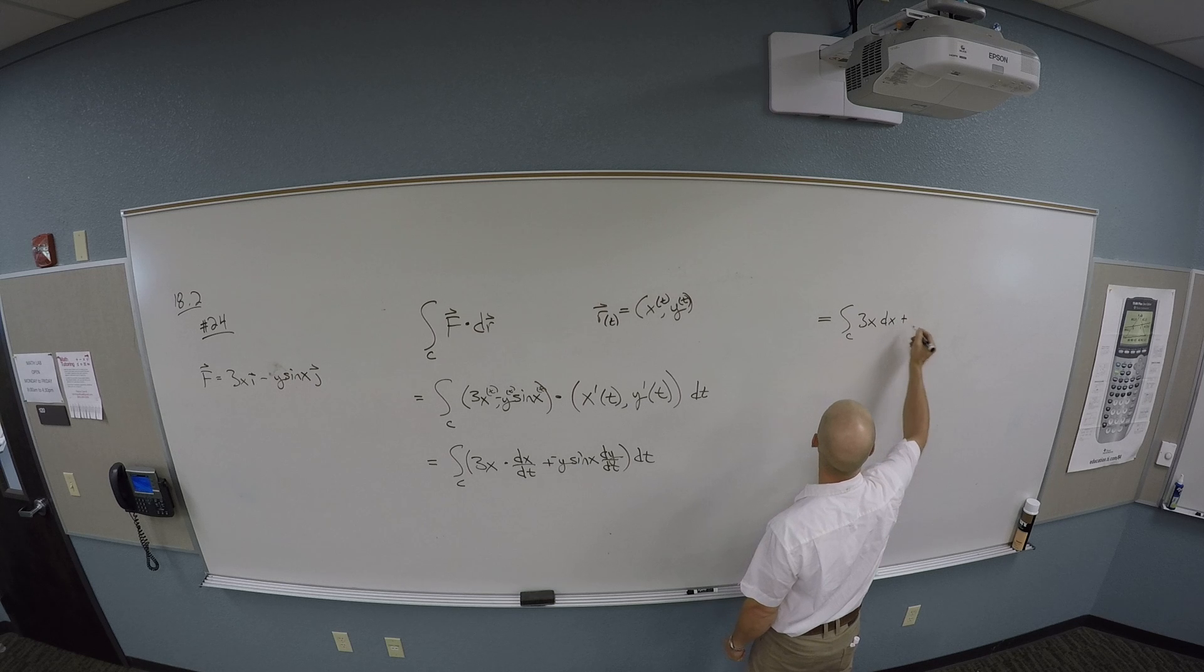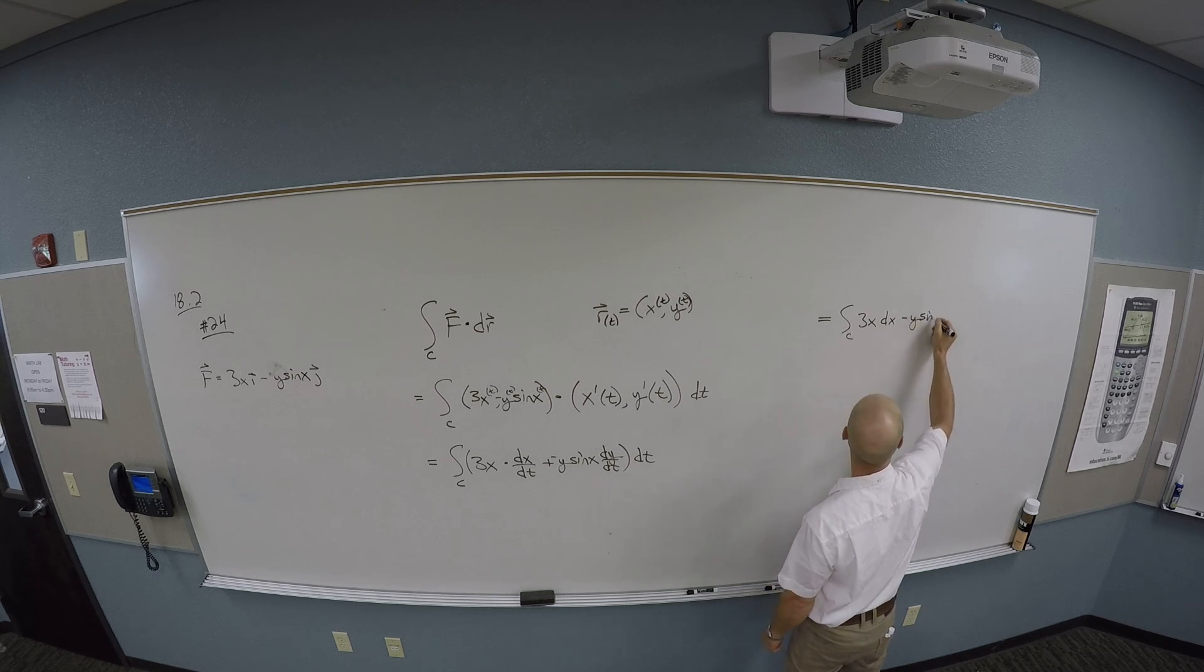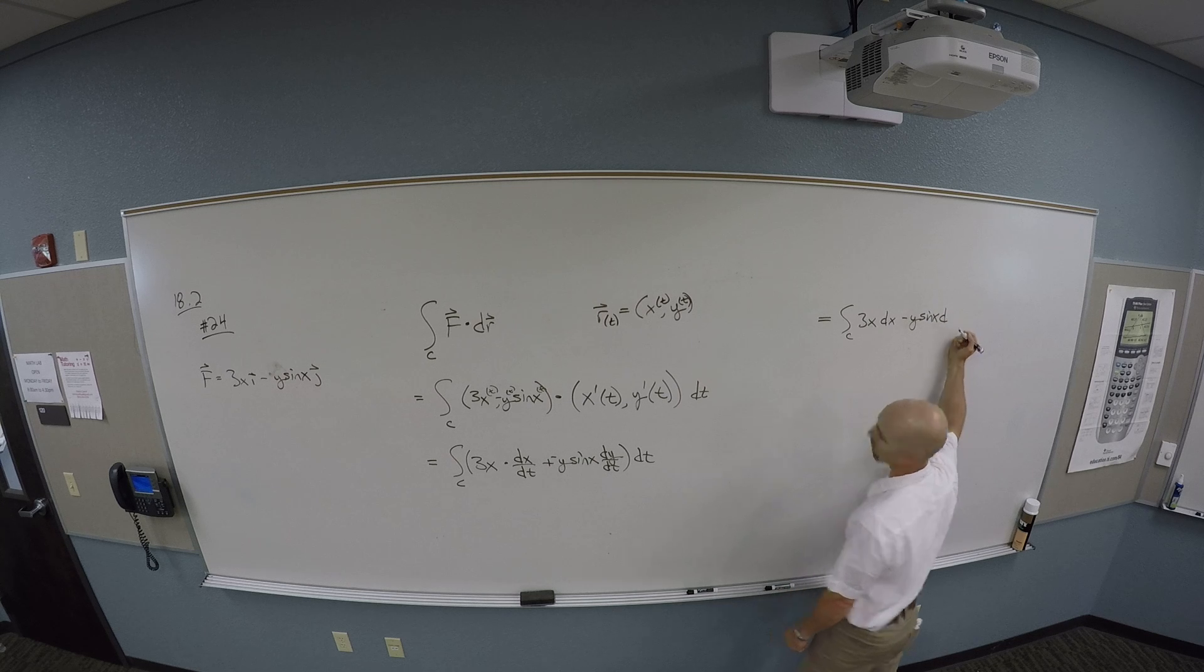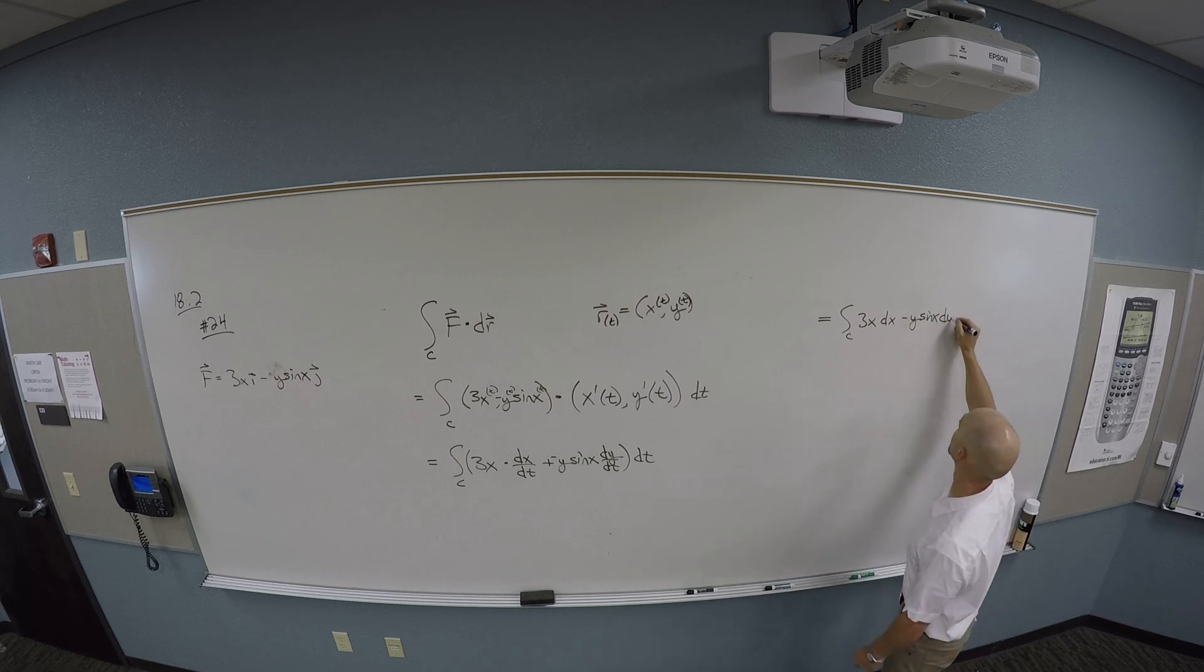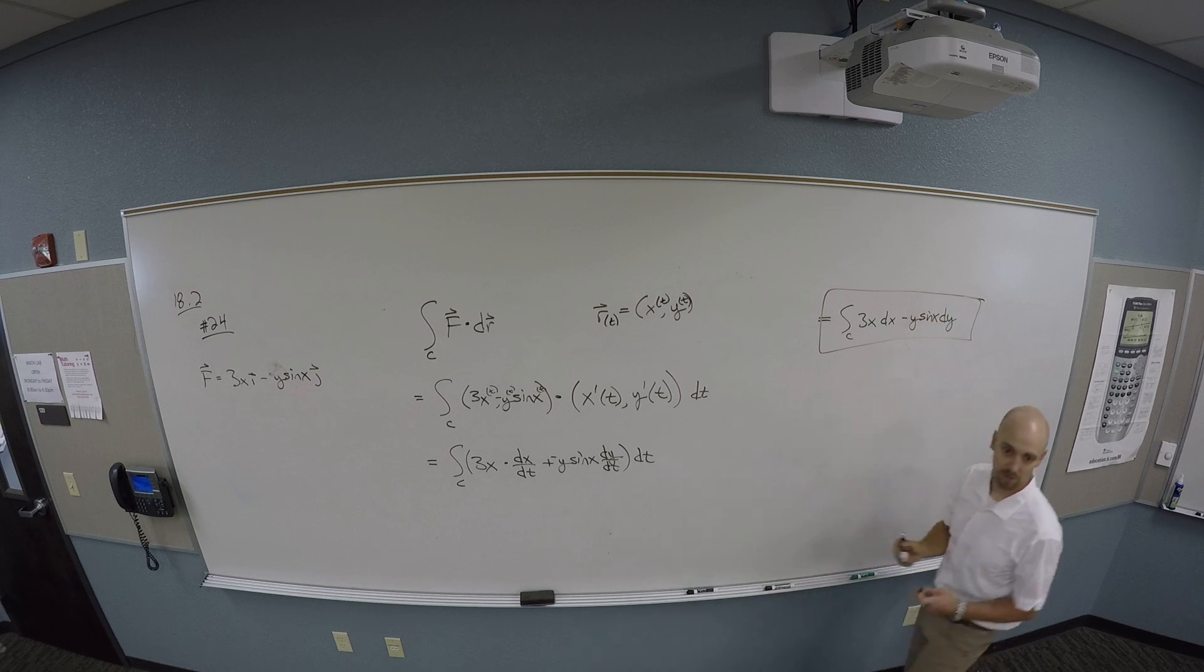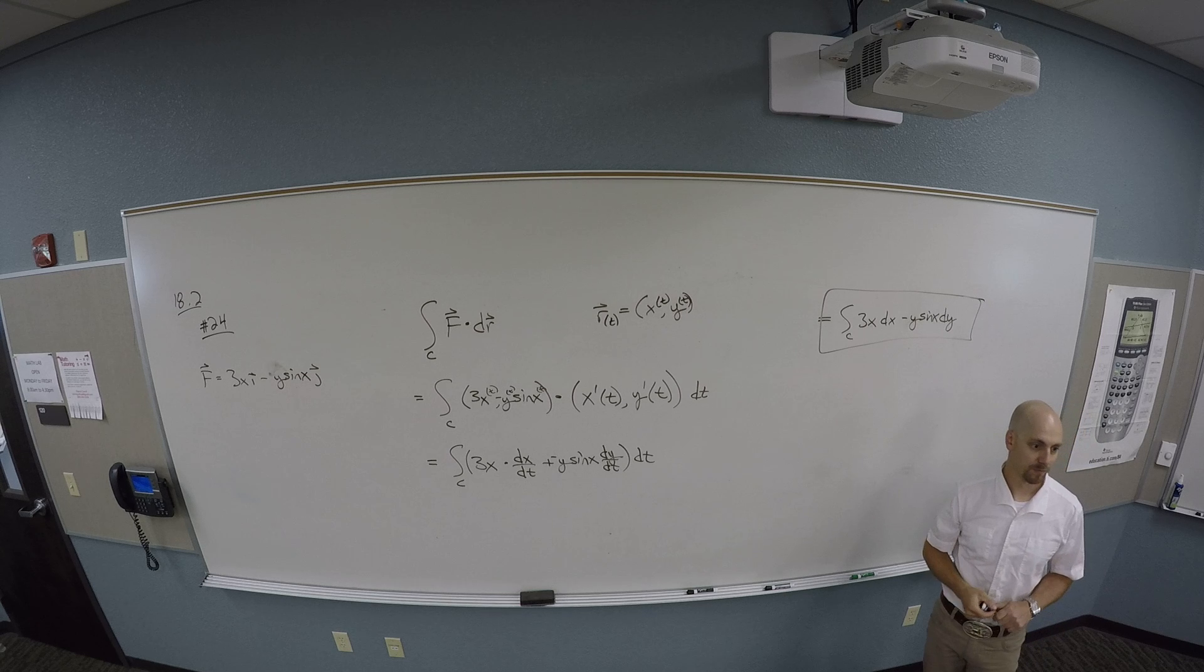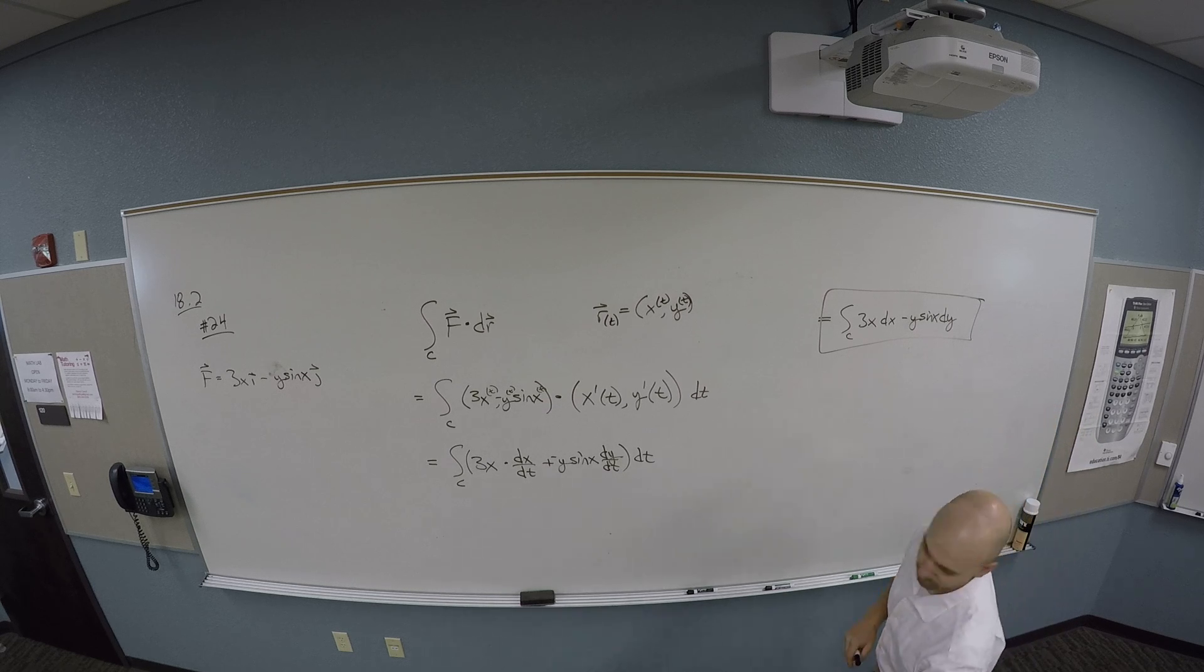And then I'm adding to this minus y sine x dy dt. Don't you mean negative one? Because our... Yeah, it's minus. It's minus y sine. Oh, I'm just an idiot. Okay, and then all this is multiplied by dt, right? I'm doing all this integration dt.